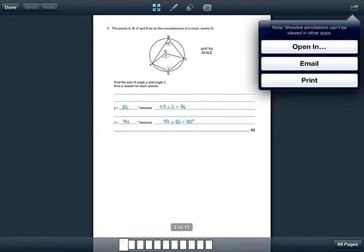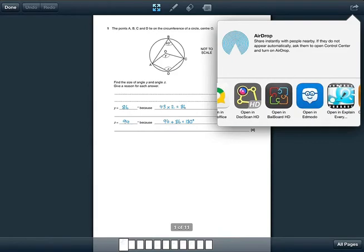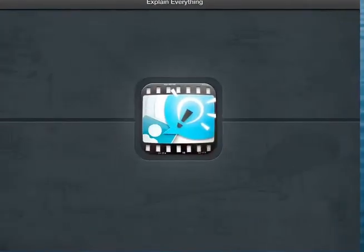So what you could do is open it up, select Open In and scroll across until you've got to Explain Everything. Once you've got to Explain Everything, open it up.